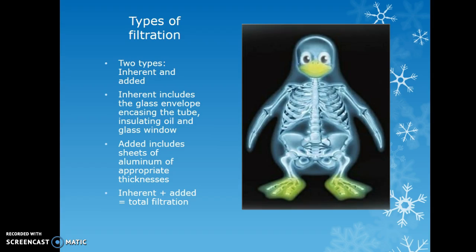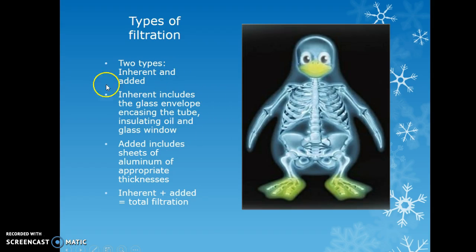There are two types of filtration: inherent and added. Inherent filtration includes the glass envelope, tube casing, insulating oil, and glass windows — all the physical parts before the collimating housing. Added filtration includes sheets of aluminum of appropriate thickness; some older tubes have an adjustable disc between the collimator housing and the x-ray tube. Inherent plus added equals total filtration.